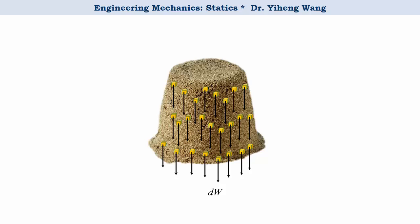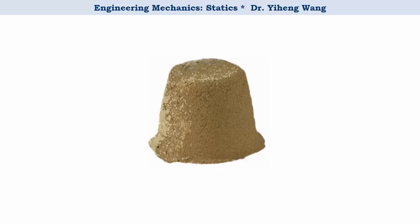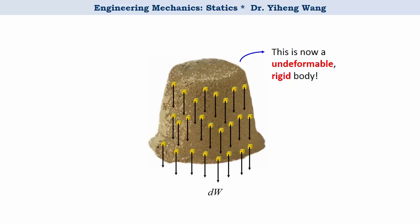In this class we deal with undeformed rigid body, and we know that in reality a pile of sand is definitely deformable. So let's imagine this pile of sand is tightly glued together. I formatted the picture to reflect that, and now it has become a solid undeformable rigid body, still made up of an infinite number of particles with differential weight, dw, distributed through its volume.